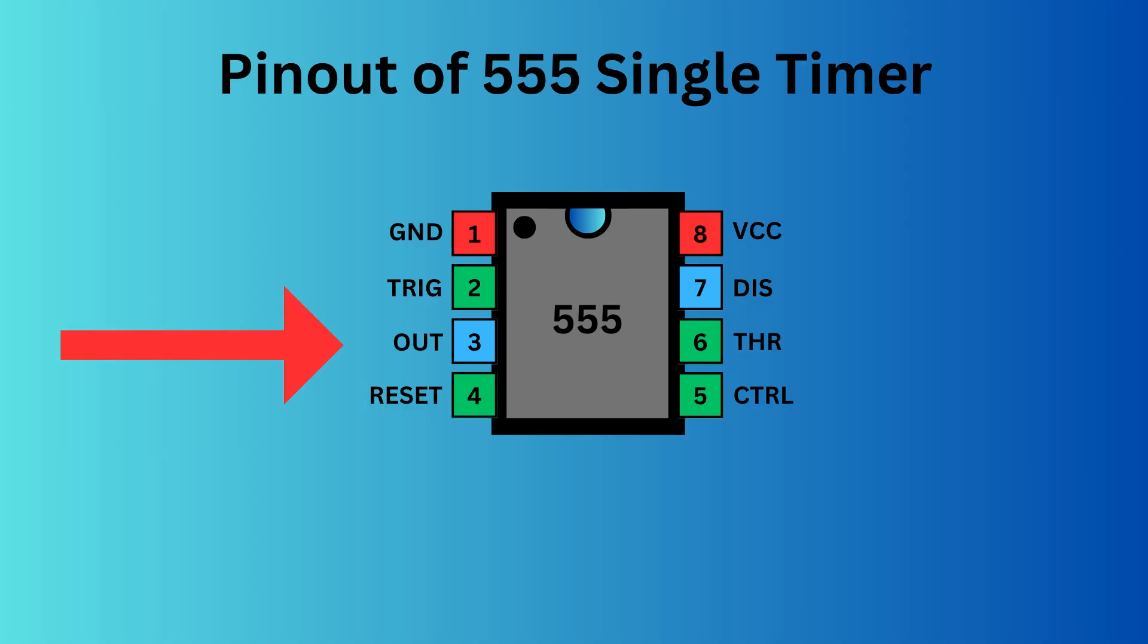Monostable, astable, or bistable. Pin four, the reset pin, is used to reset the 555 timer's internal flip-flop. Pin five serves as the control pin, enabling you to adjust the threshold voltage levels used by the internal comparators to set and reset the flip-flop.